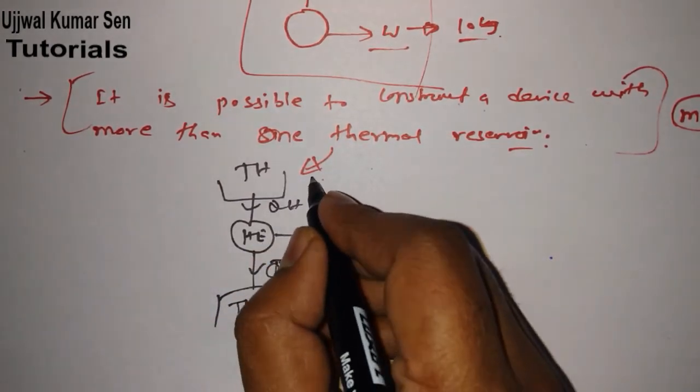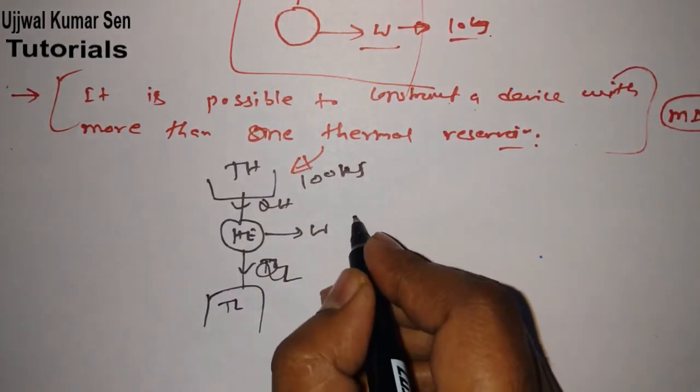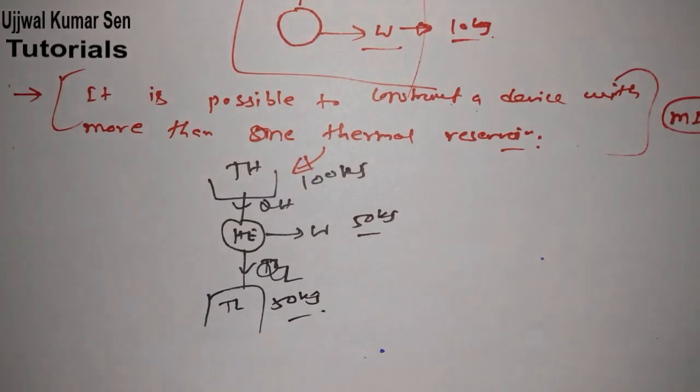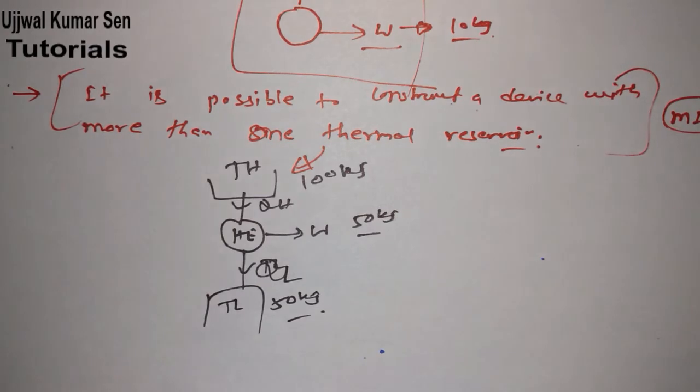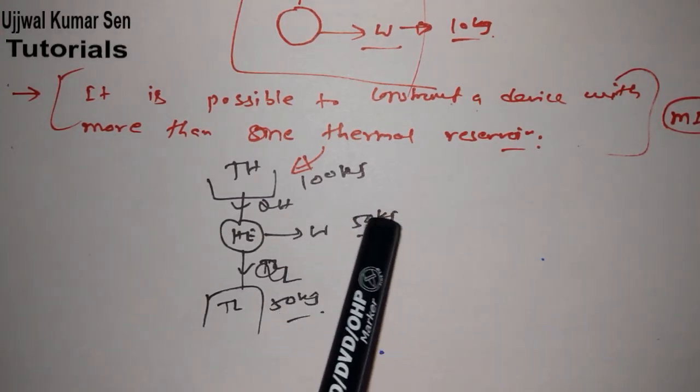This is TH, this is TL, this is W. In case of this, what is happening? Let me share with you QL and QH. Suppose that I am giving 100 kilojoule input here. I am getting 50 kilojoule output and 50 kilojoule rejected. That means the efficiency of this engine is output by input, that is 50 percent.